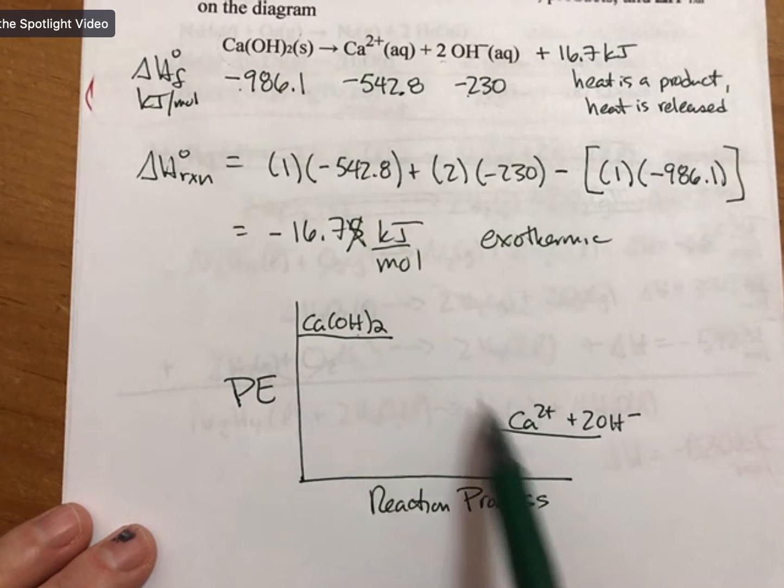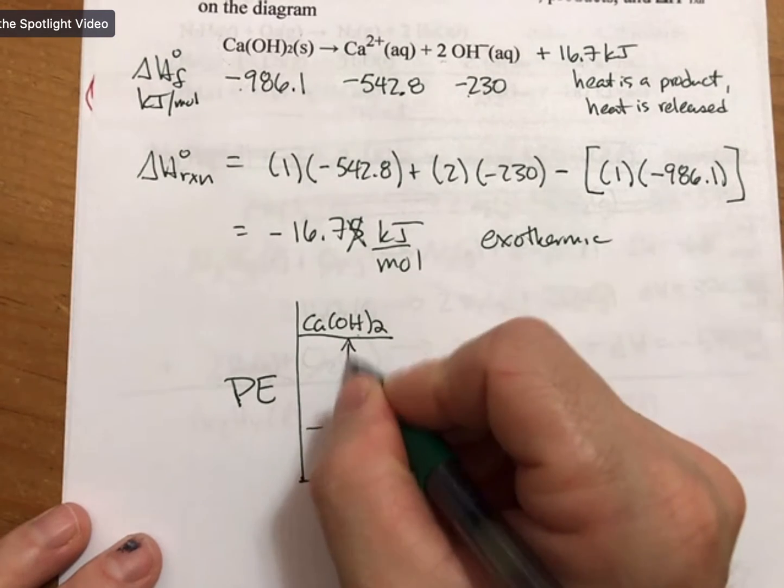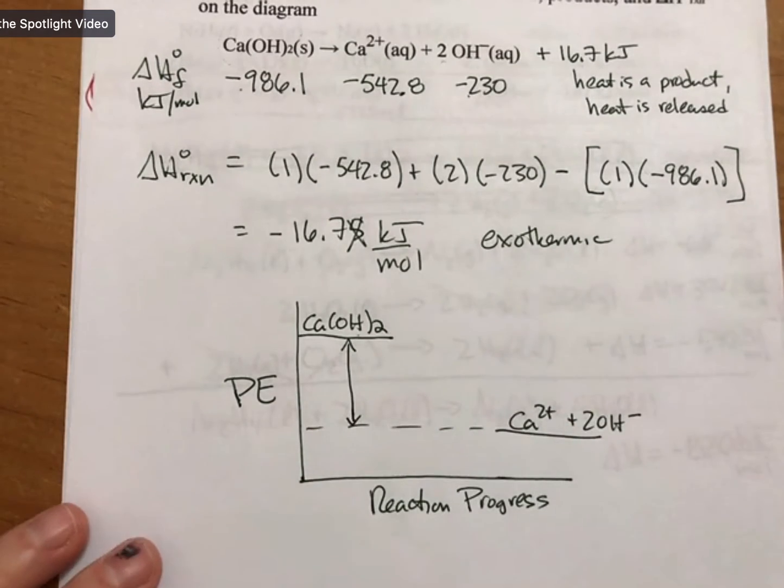You would have to show reactants and products and delta H reaction on the diagram.